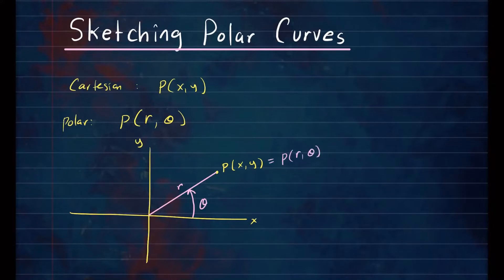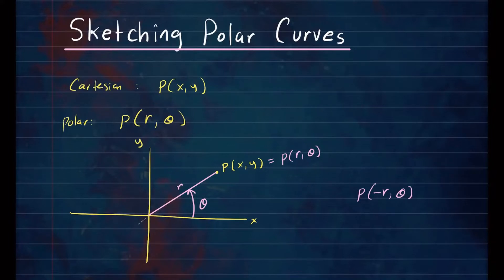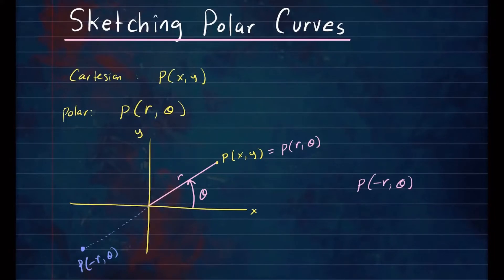Something to remember is that r could be negative. If you want to plot the point (−r, θ), you still drew the same angle theta, but negative r means you go in the opposite direction. So you reflect the point P about the origin — that's where (−r, θ) ends up. Negative just indicates you go in the opposite direction. Similarly, if theta is negative, then instead of traveling counterclockwise, you go clockwise. So this indicates negative theta.